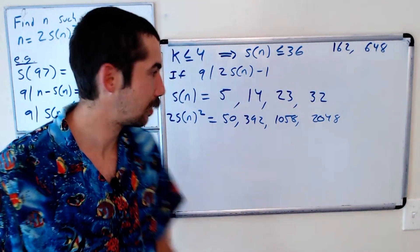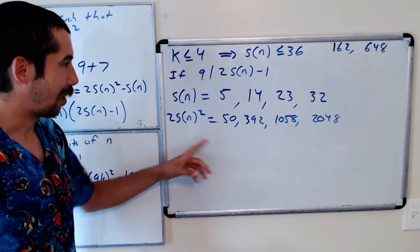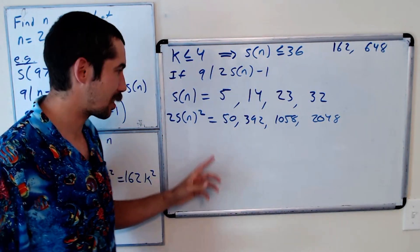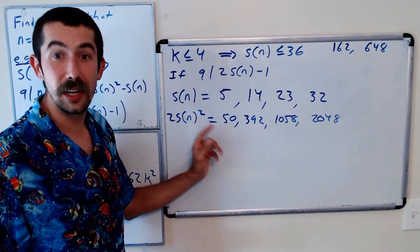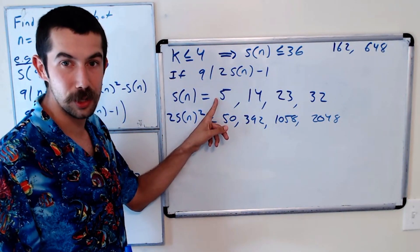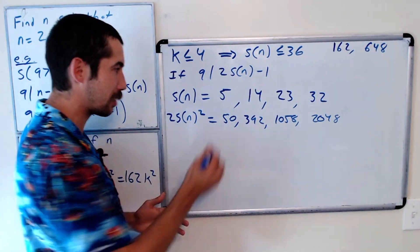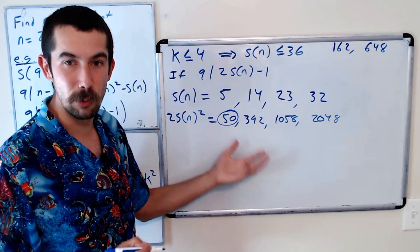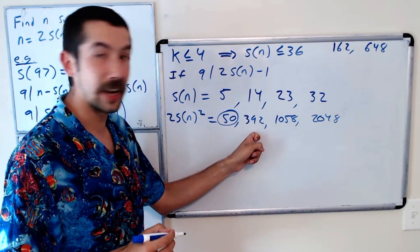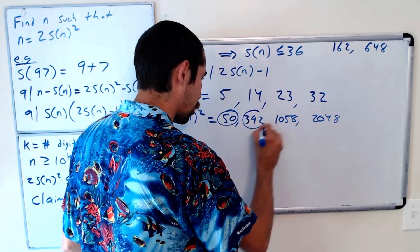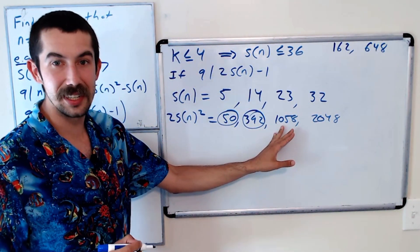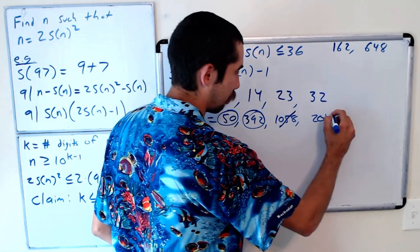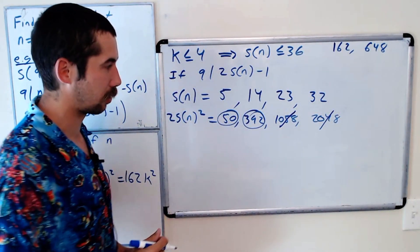2048, the famous video game. We'll do just as before, we'll check. Are any of these numbers solutions? And it's possible that some of them are. So 50, the sum of the digits of 50 is 5 plus 0. So 5 squared is 25 multiplied by 2, we get back to 50. So 50 is a solution. 392, the sum of the digits is 14. Square it, multiply by 2, we get 392. So that's another solution. 1058, the sum of the digits is 14. If you square it and multiply by 2, you get 392. So this is not a solution. And then as earlier, that's also not a solution.